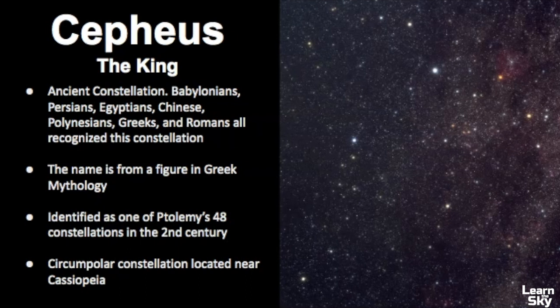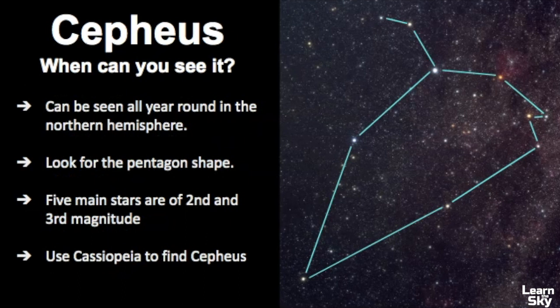It's classified as a circumpolar constellation, and it's located right next to Cassiopeia. So when can you see it? Cepheus can be seen all year round in the northern hemisphere, and you want to look for a pentagon shape. The five main stars of Cepheus are of 2nd and 3rd magnitude, and whenever I'm looking for Cepheus, I try to find Cassiopeia first, and then I know that Cepheus is right next to Cassiopeia.